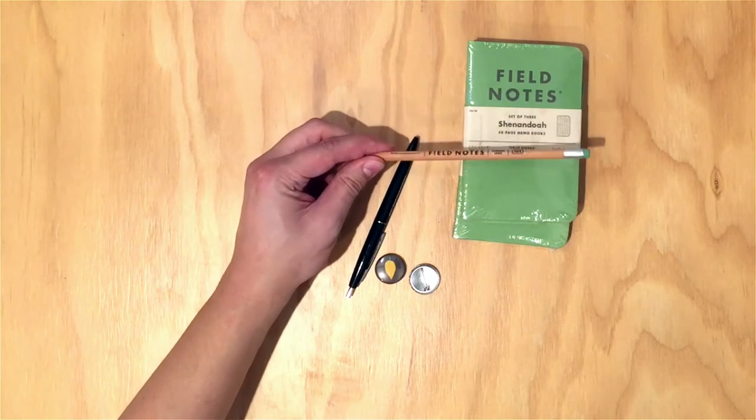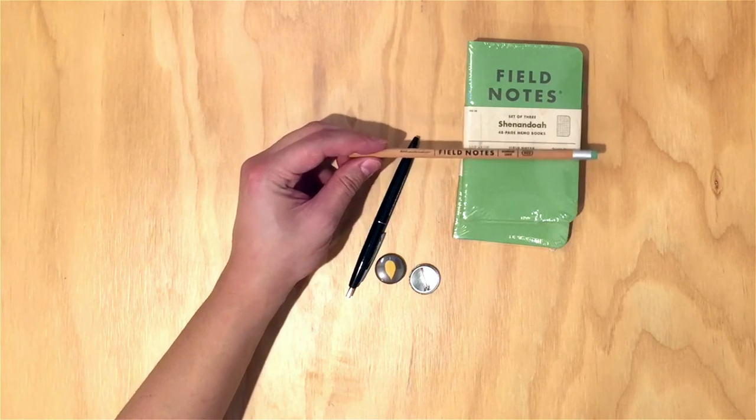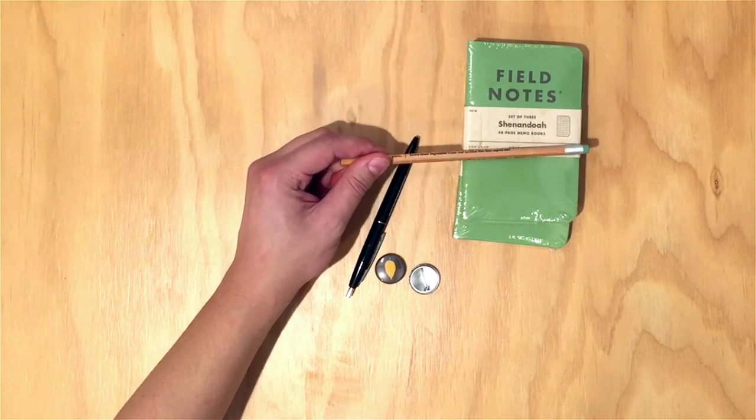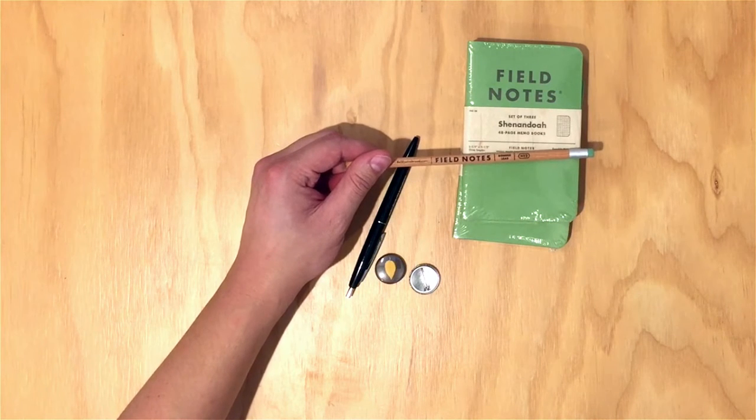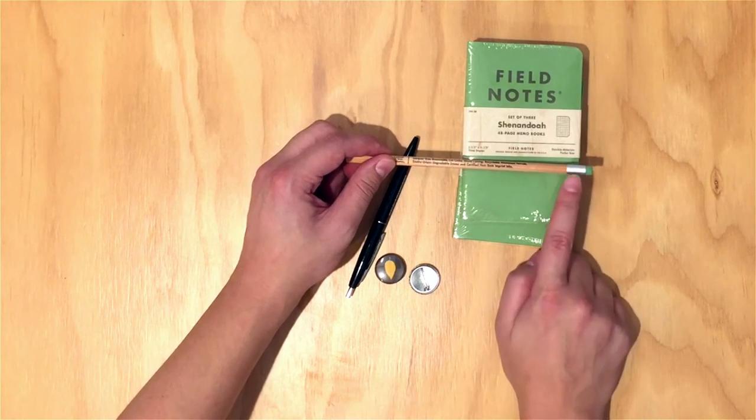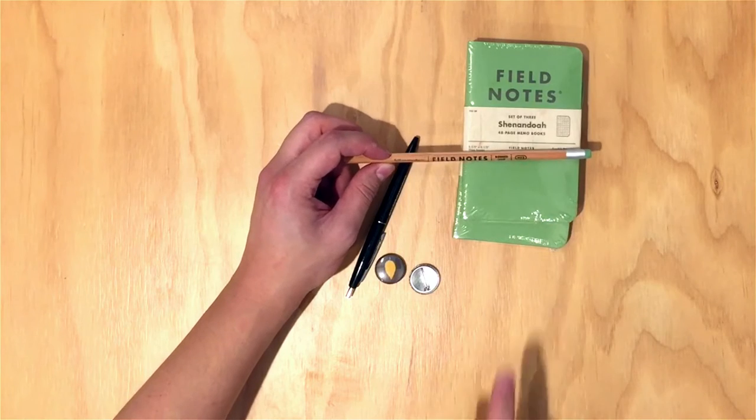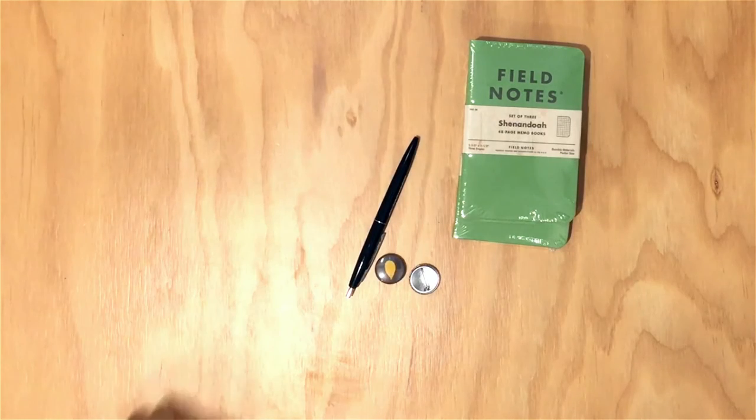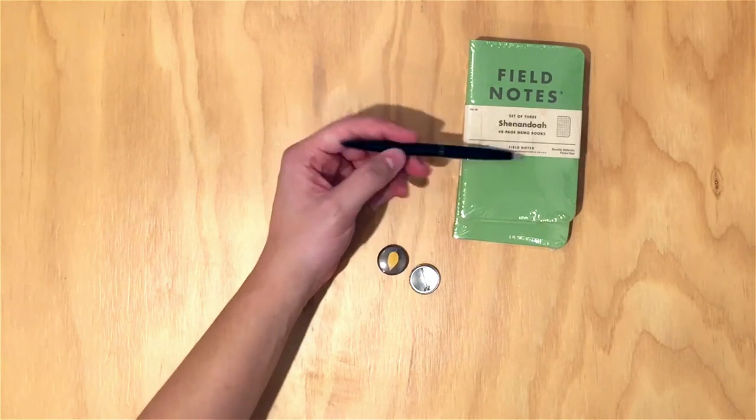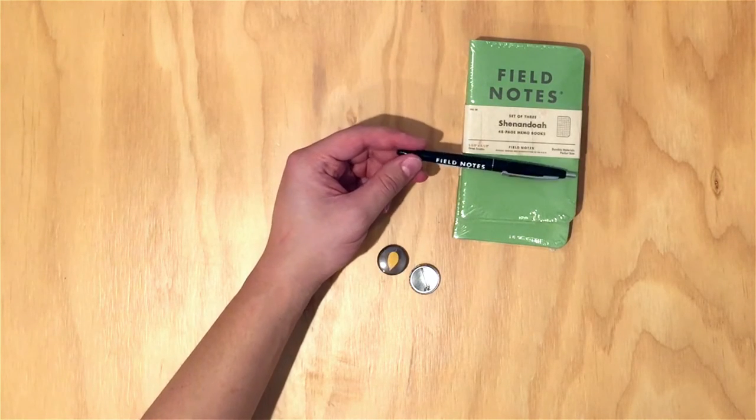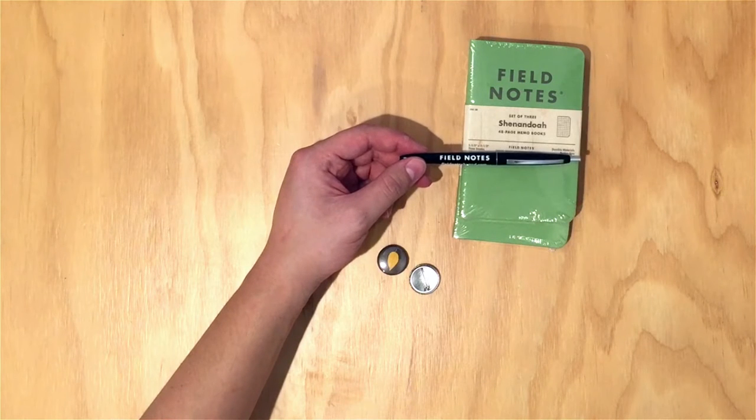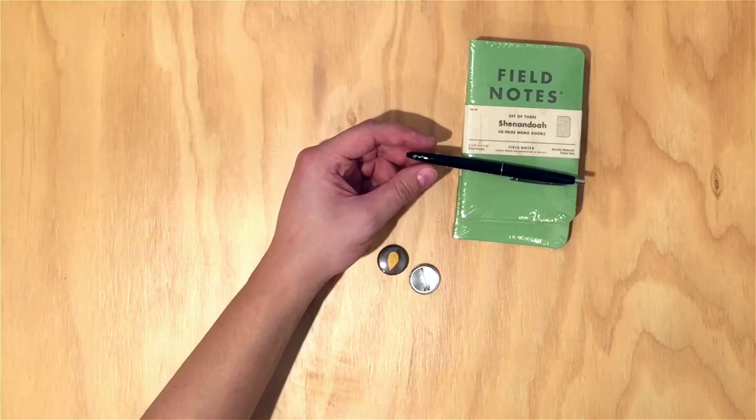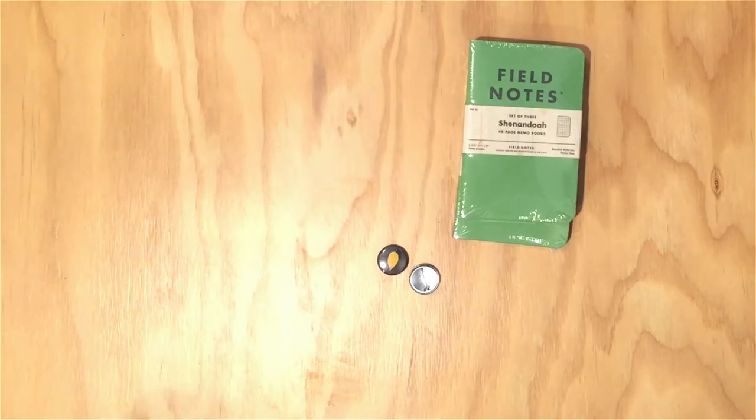I also have one of the famous Field Notes pencils. Not my very favorite pencil in the world, but not a bad pencil either. I love the ferrule and the green eraser, and obviously the type on the front here. But pencils are for another show. And we have a Field Notes BitClick pen. This is pretty standard, pretty classic.